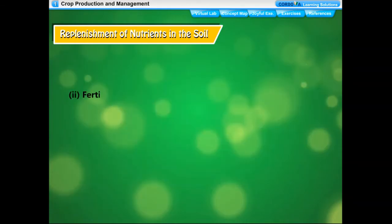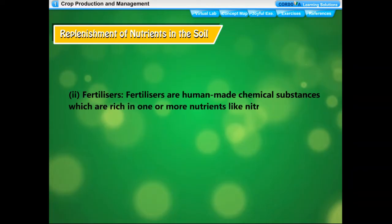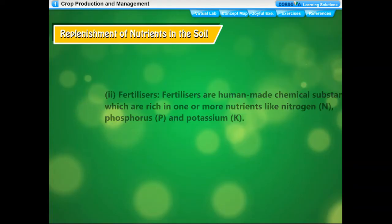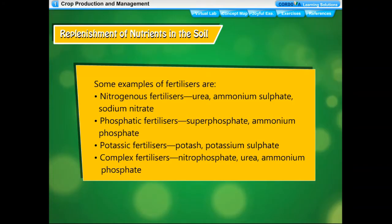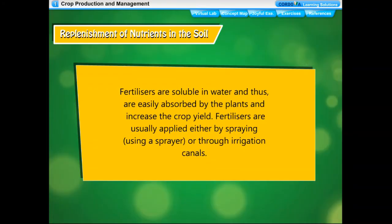Fertilizers are human-made chemical substances rich in one or more nutrients like nitrogen (N), phosphorus (P), and potassium (K), and are produced in factories. Examples include nitrogenous fertilizers such as urea, ammonium sulfate, and sodium nitrate; phosphatic fertilizers such as superphosphate and ammonium phosphate; potassic fertilizers such as potash and potassium sulfate; and complex fertilizers such as nitrophosphate and urea ammonium phosphate. Fertilizers are soluble in water and thus easily absorbed by plants, increasing crop yield. They are applied by spraying using a sprayer or through irrigation canals.